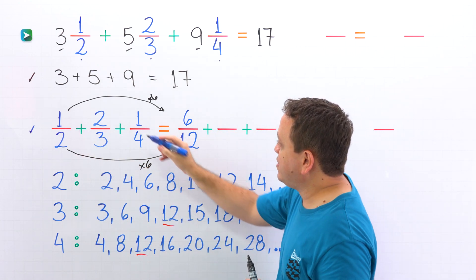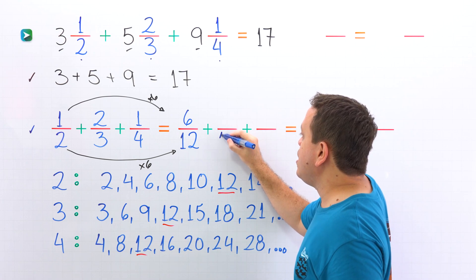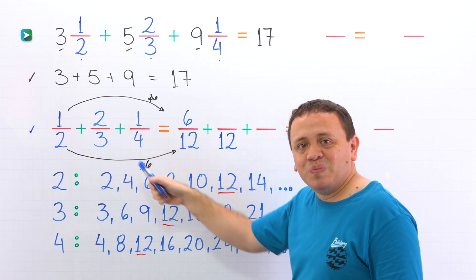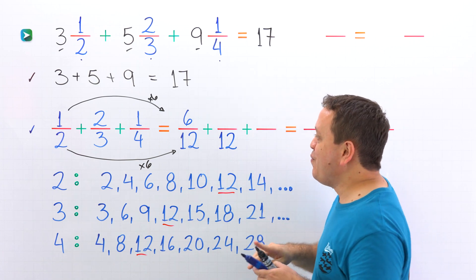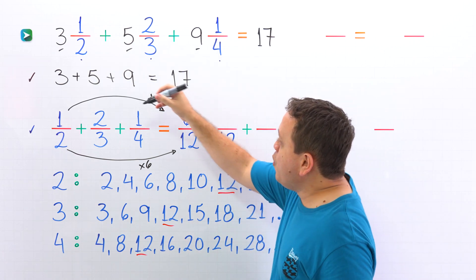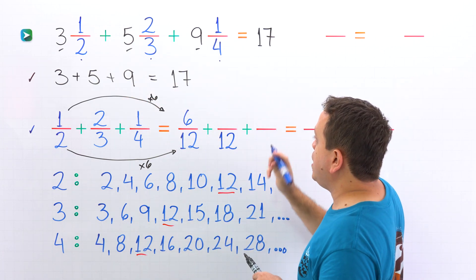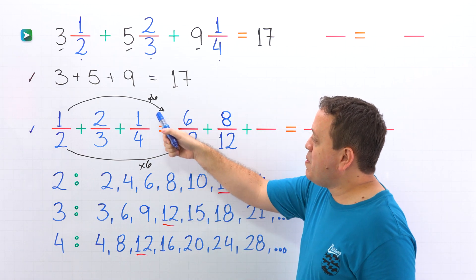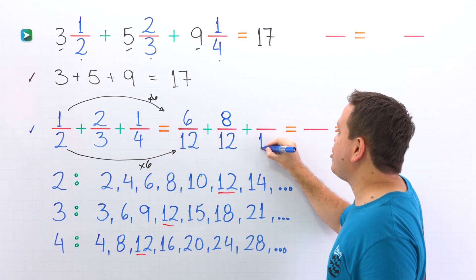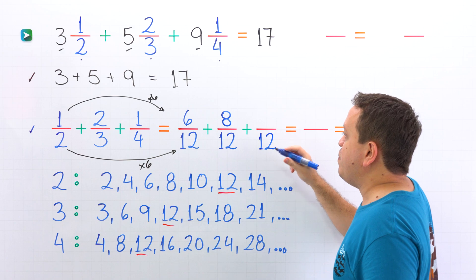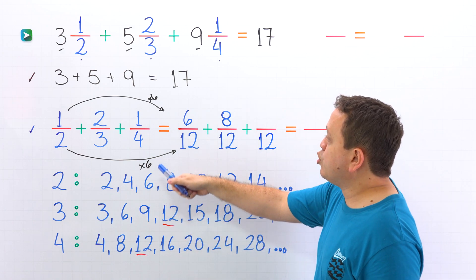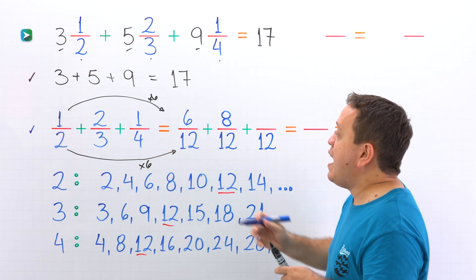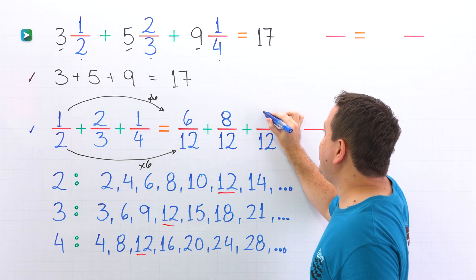Next, we are going to convert two thirds to an equivalent fraction with denominator twelve. By what number should we multiply three to get twelve? By four. Now we multiply two by four, and two times four gives us eight. Then we convert one fourth: by what number should we multiply four to get twelve? By three. And one times three gives us three.